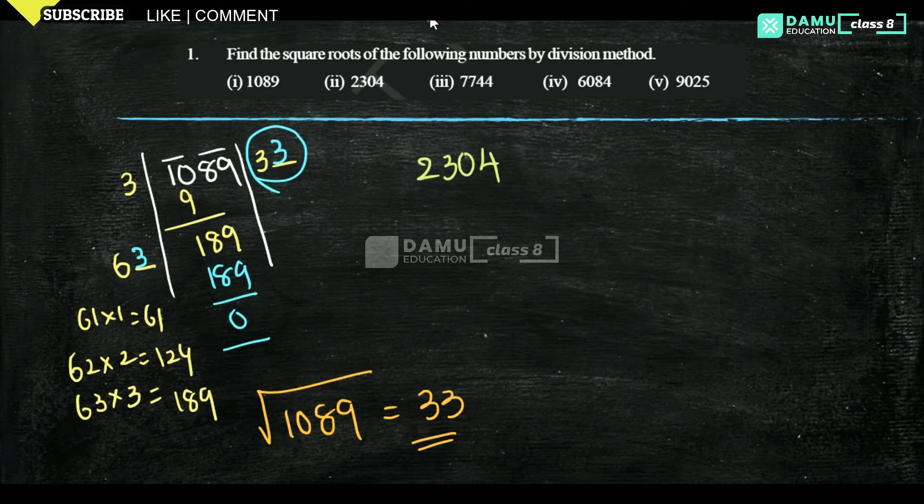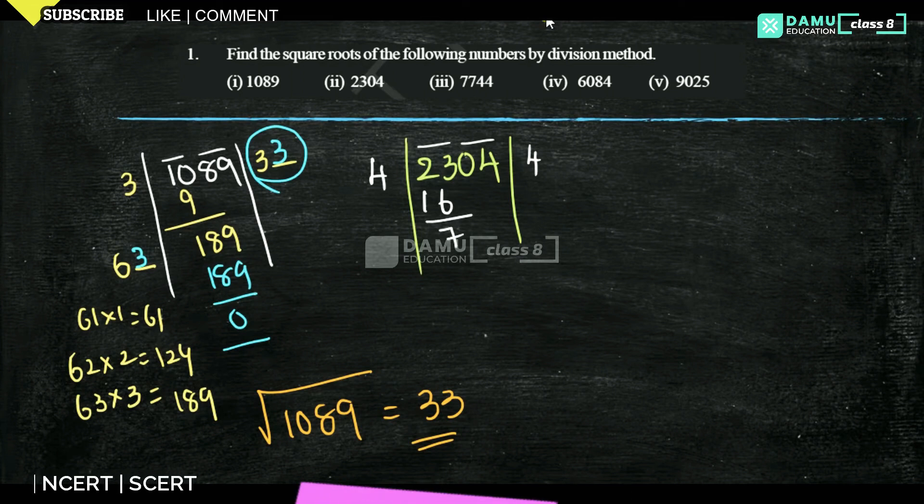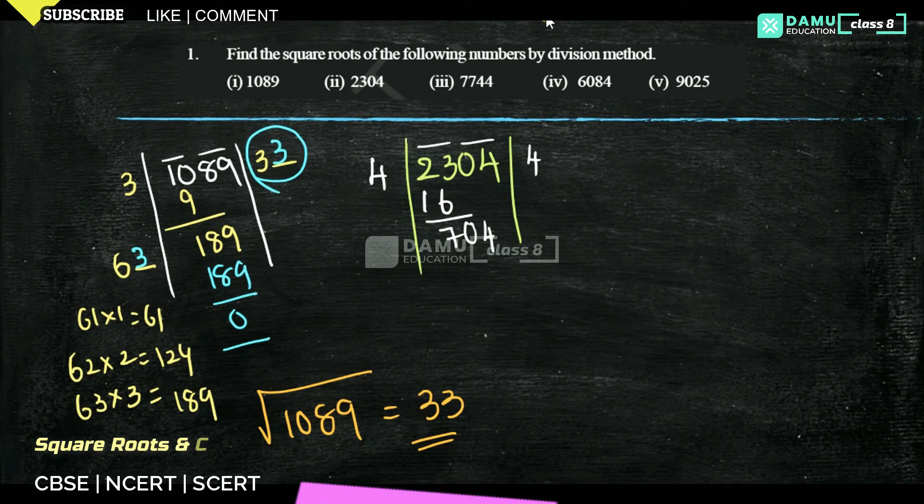Then 2304. Let's start the division. So 23, near to that, what is the perfect square number below that? 25, but below 23 is 4. 4 times 4 is 16. So 23 minus 16 will be 7, then take 04 as it is. 4, and 2 times 4 is 8.